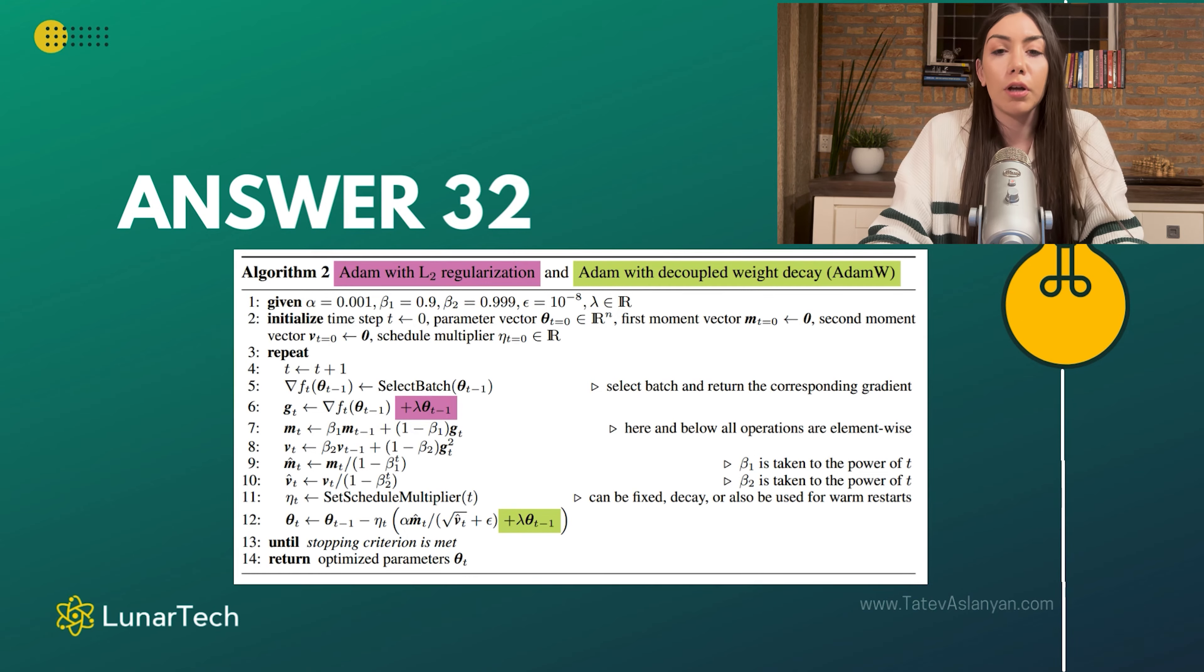That's what AdamW does. And the way it does that is that, as you can see here, unlike the traditional Adam with L2 regularization, what it does is that it adds this decay, this penalization term, right in the update process when updating the model parameters.